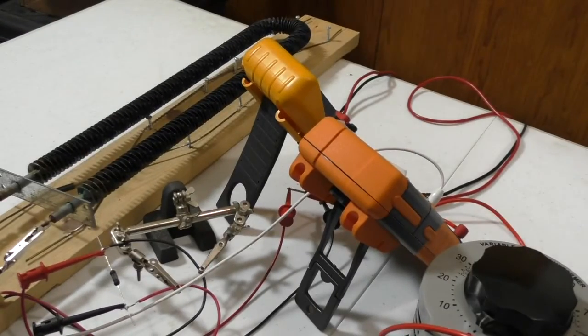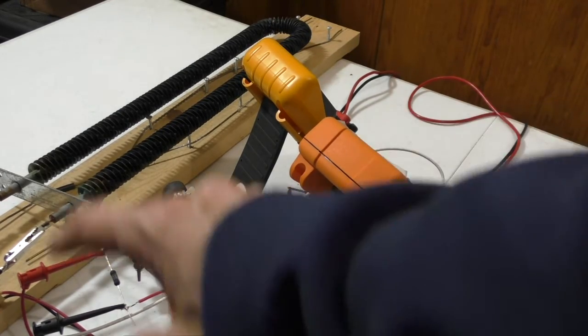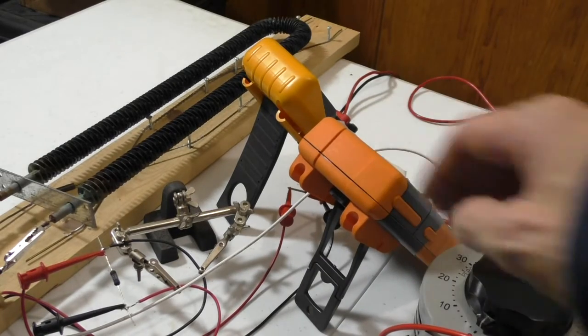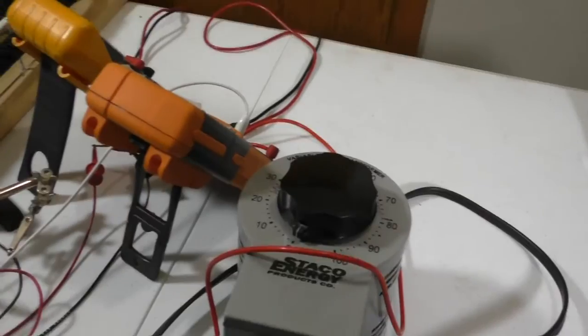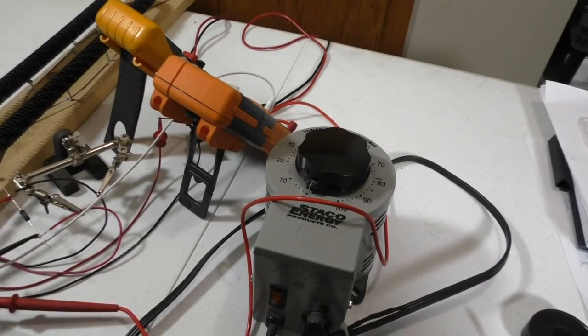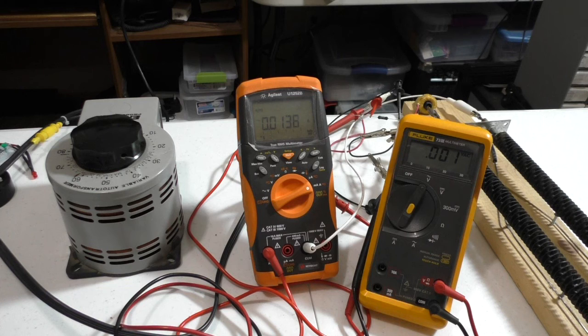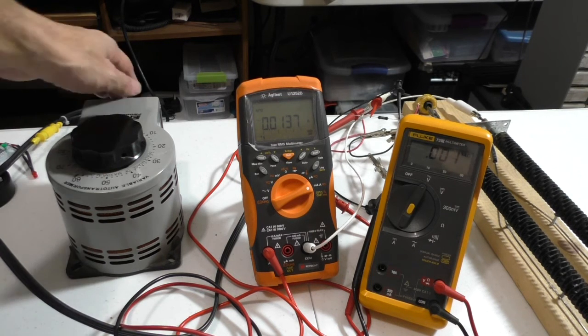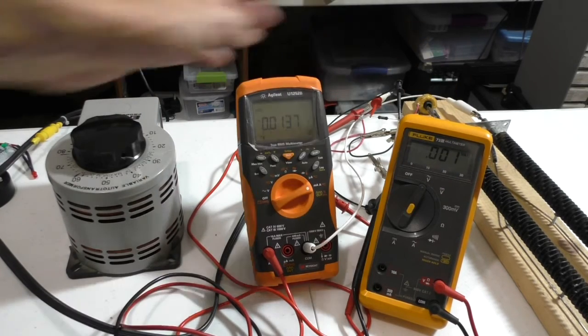I'm going to measure that voltage with the voltmeter here, and we'll measure the actual current going into the element with our current meter. I'm going to control the current with this variac. I've got this thing hooked up and ready to go. Power's on. AC amp meter and AC volt meter.